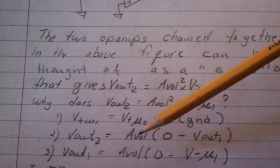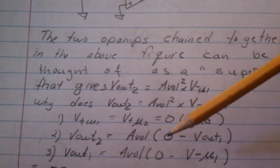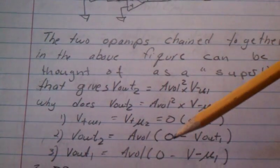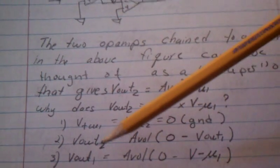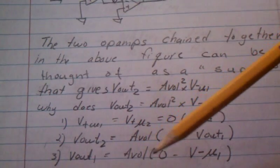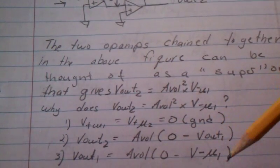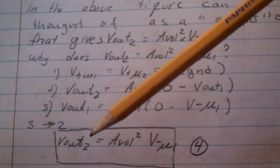V_out2 equals the open loop gain times V_plus U2 minus V_out, but that's equal to zero. For the second op-amp, V_out equals the open loop gain times zero minus V_minus at U1. So we substitute all of these together and we get V_out2 equals the open loop gain squared times V_minus U1.